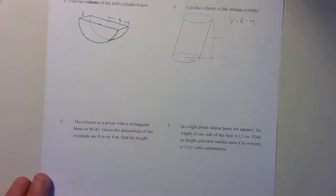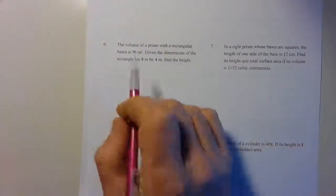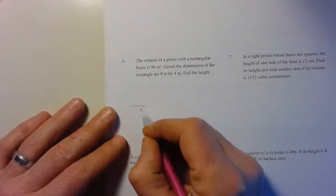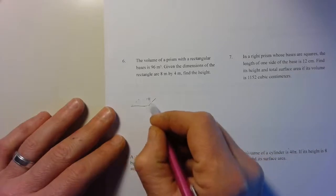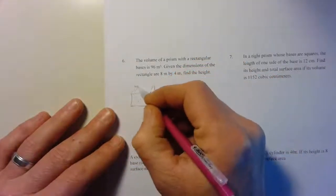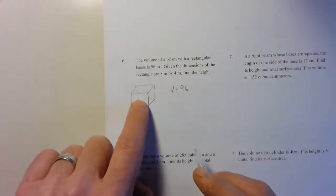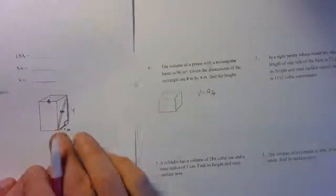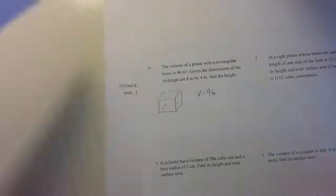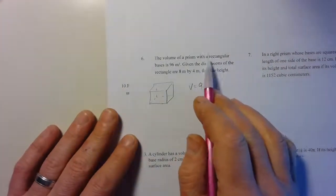I'm going to do number six here. The volume of a prism with a rectangular base is 96 cubic meters. So I'm going to draw a prism - I'm going to make it a right prism as well. If you're having trouble drawing these, you can just use one of these as a model. The rectangle base has dimensions of 8 and 4. We need to find the height.